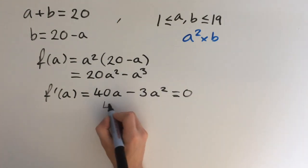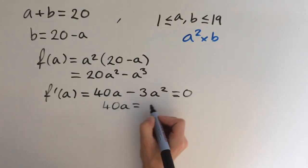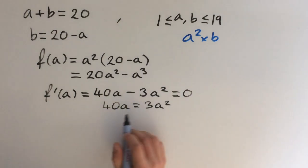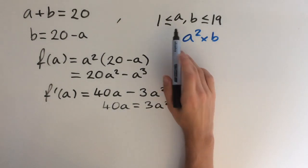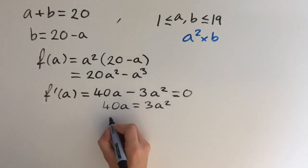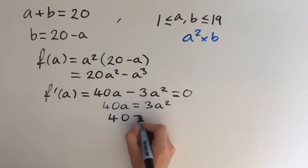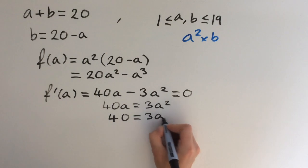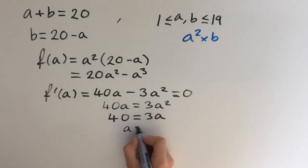Let's take this on to the other side. We get 40 a equals 3 a squared. And we know that 0 is not a solution, because a has got to be greater than or equal to 1. So we can just divide by a, and we're not going to lose any solutions. So we get 40 equals 3 a. And divided by 3, we get a equals 40 over 3.